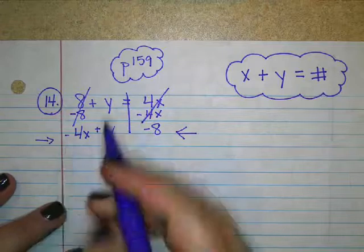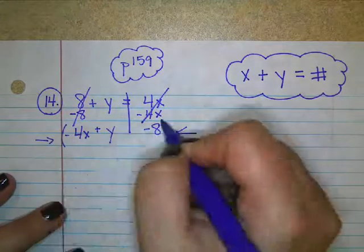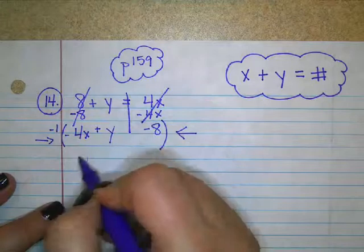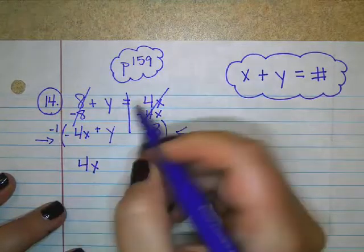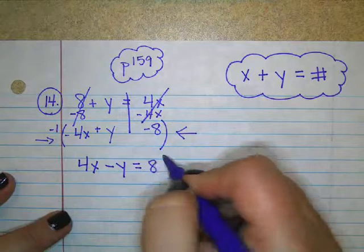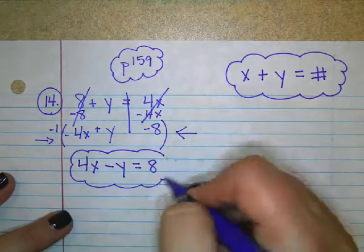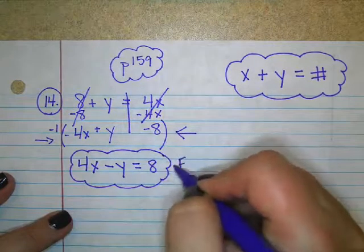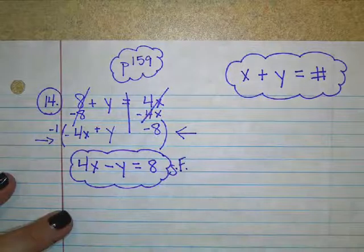If I go through and multiply everybody by a negative 1, then I'll be left with 4X minus Y equals 8. And that would be considered standard form.